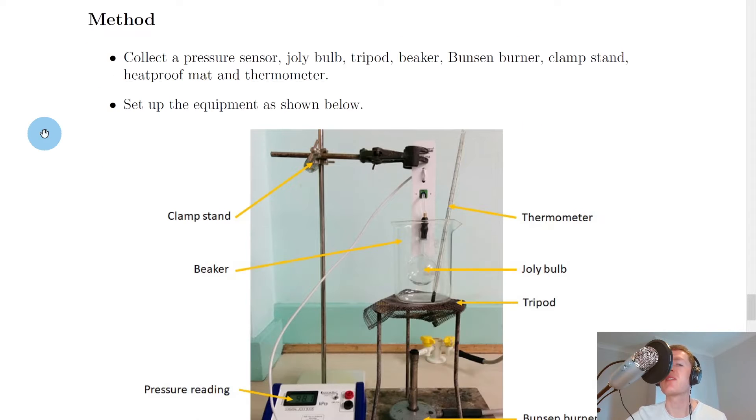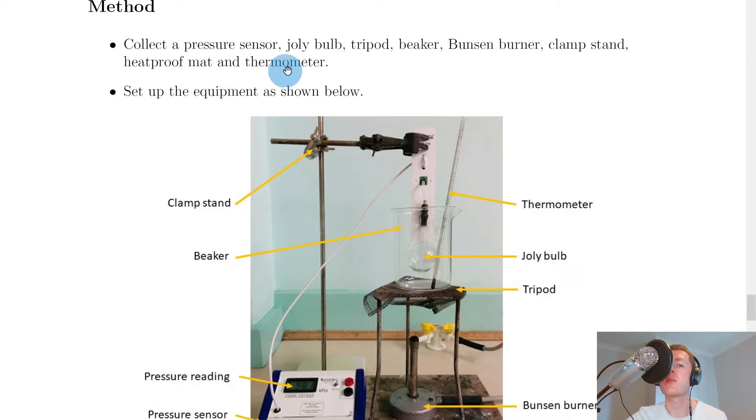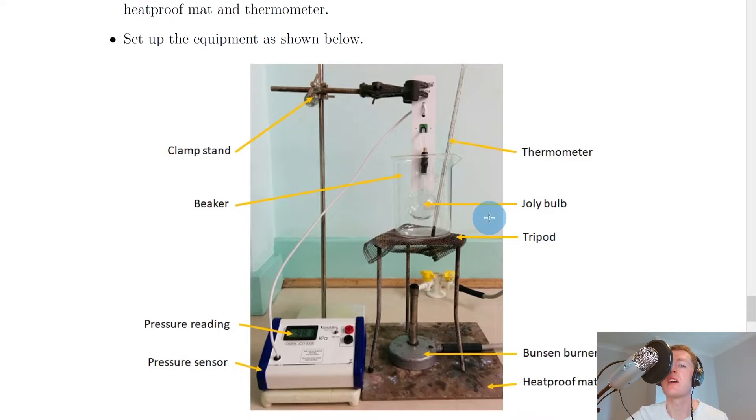Next we have the method and again just like we saw for Boyle's Law, this experiment could be done in more than one way with slightly different equipment. So looking at what I've got here, it says to collect a pressure sensor, jolly bulb, tripod, beaker, Bunsen burner, clamp stand, heatproof mat and thermometer and then set up the equipment as shown below.